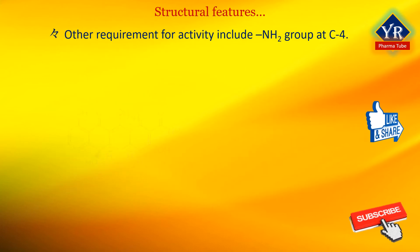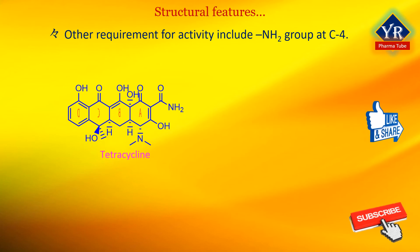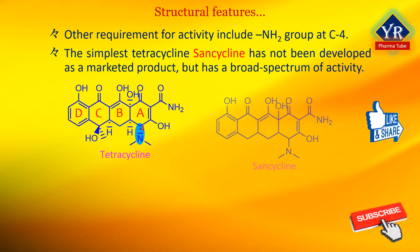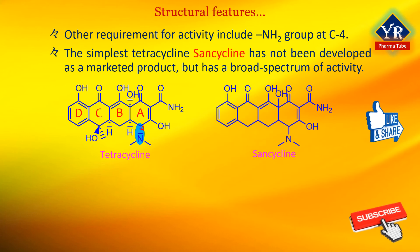Other structural requirements for good antibacterial activity include a basic amine function at the C4 position of the A ring. Derivatives unsubstituted at the C4 center are regarded as antibacterials in an academic sense only. The simplest tetracycline that displays a broad spectrum of antibacterial activity is the C4A dimethylamino congener sancycline, which has not been developed as a marketed product.